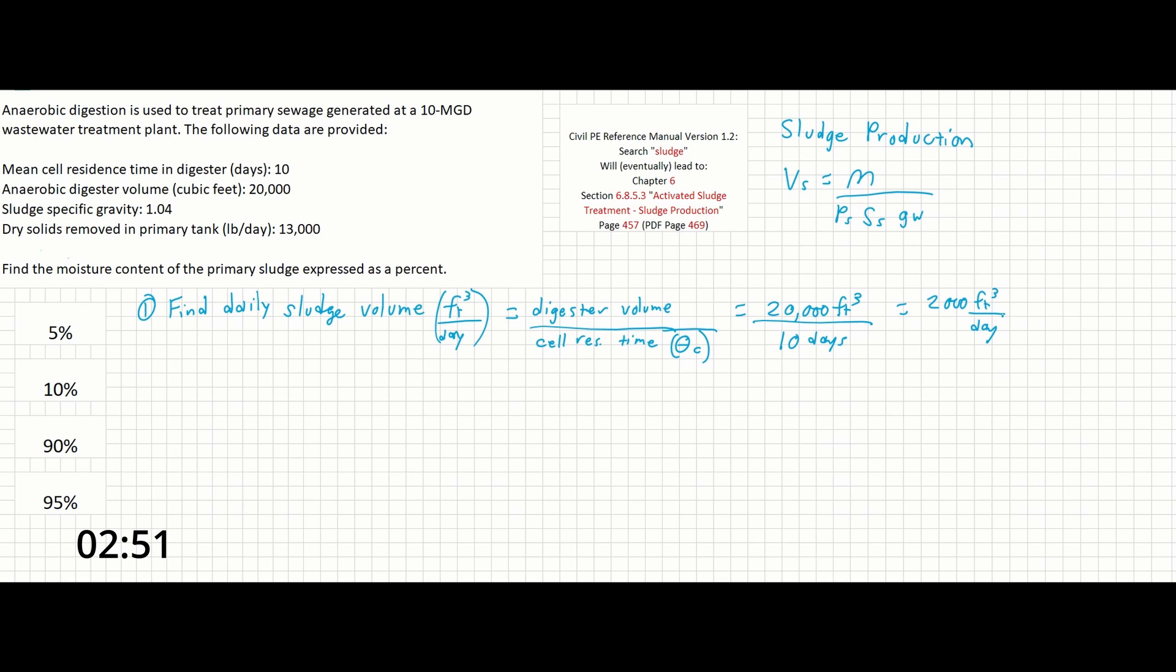We now have enough information for the sludge production equation to fill out all of the terms except for one, which in this case is going to be P_S, which again is the percent of solids expressed as a decimal. For step 2, we're going to back calculate using the sludge production equation.